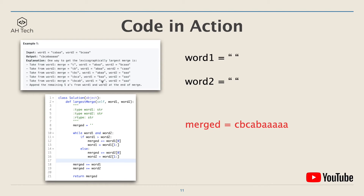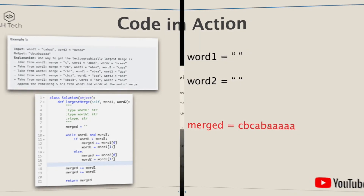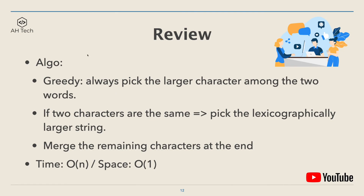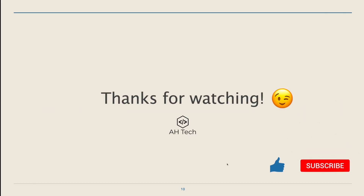So the largest merge string we can get is 'cbcab' followed by five a's — this is the final output for this example. To review: the key algorithm is a greedy approach where we always pick the larger character lexicographically among the two words. If the two characters are the same, we pick the lexicographically larger string, then merge the remaining characters at the end. The time complexity of this approach is linear and the space complexity is constant. Thanks for watching — if you like this video please give it a like and subscribe, and I'll see you in the next one.